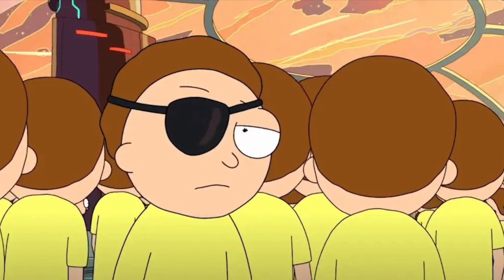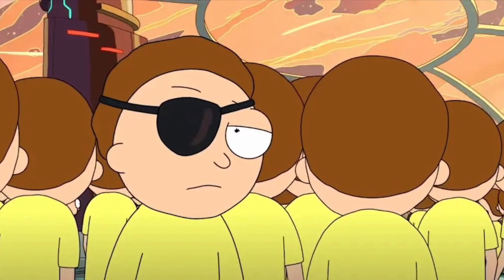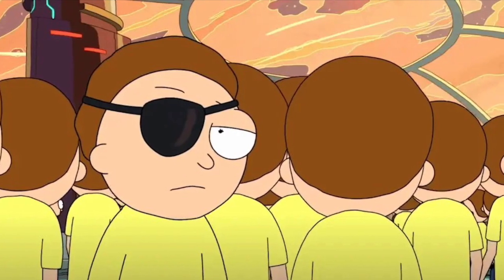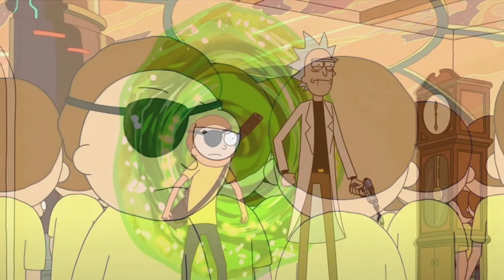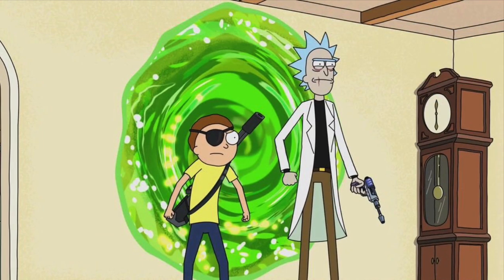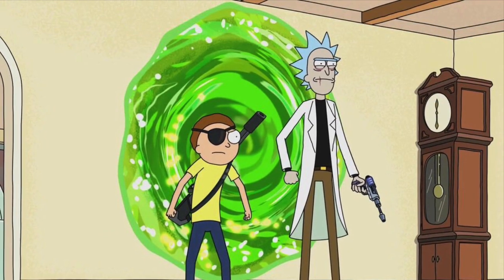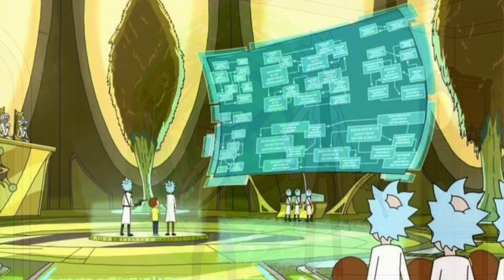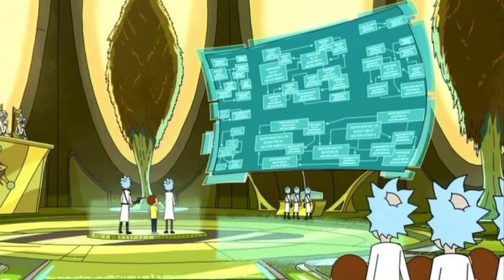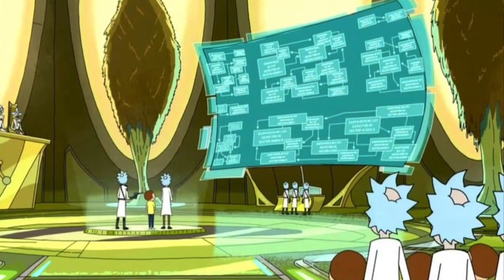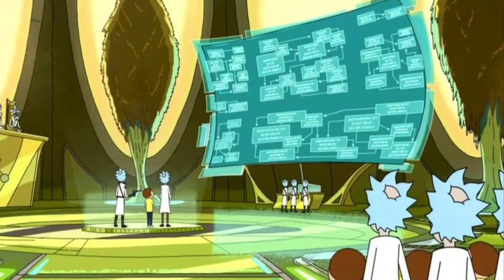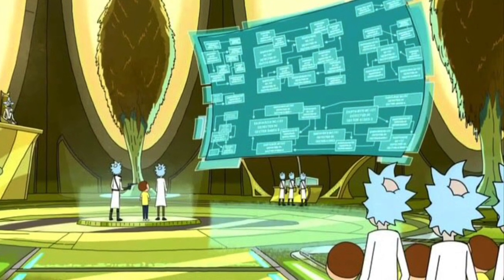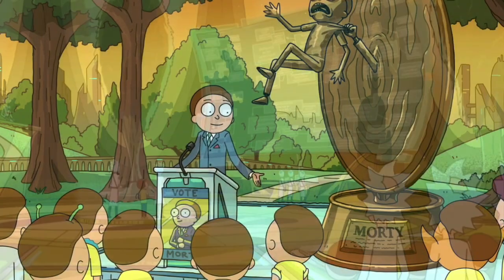Evil Morty first appears in season 1 episode 'Close Rick-counters of the Rick Kind' where, along with Evil Rick, he starts a Rick killing spree across the infinite dimensions, only to be fooled by the Rick and Morty from dimension C137. However, it's later revealed that Evil Rick was just a puppet controlled by his Morty.